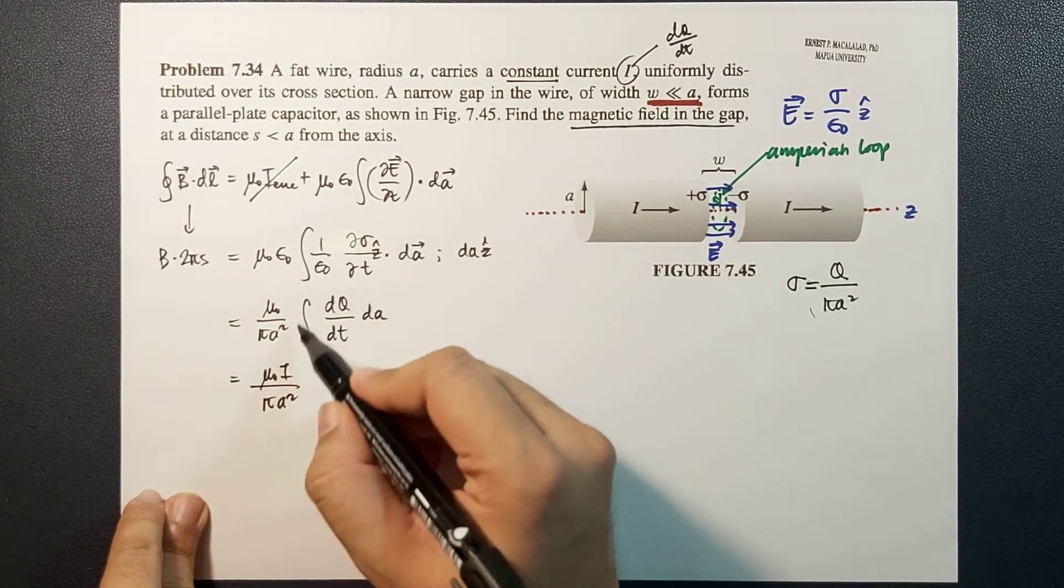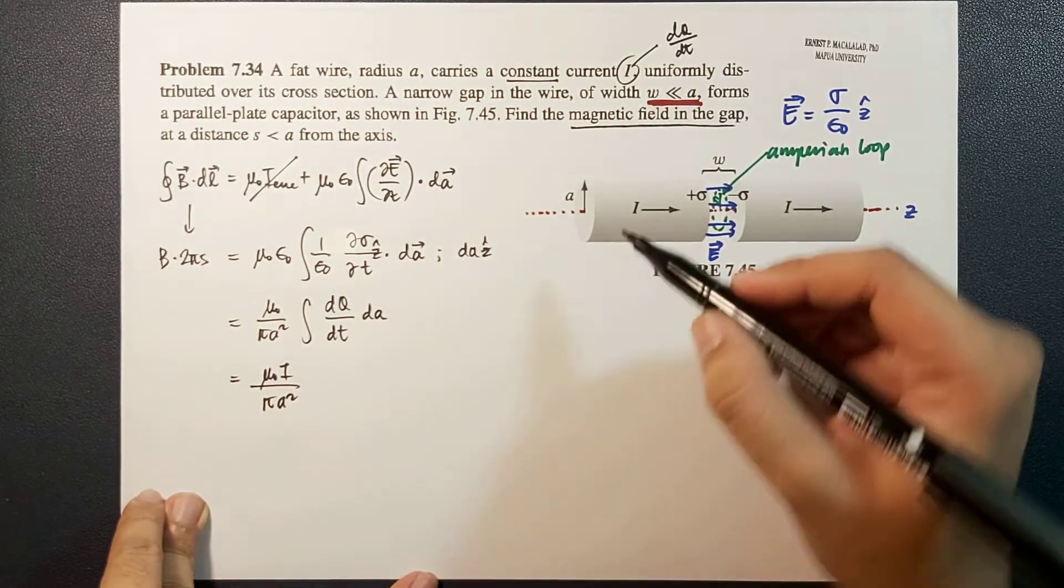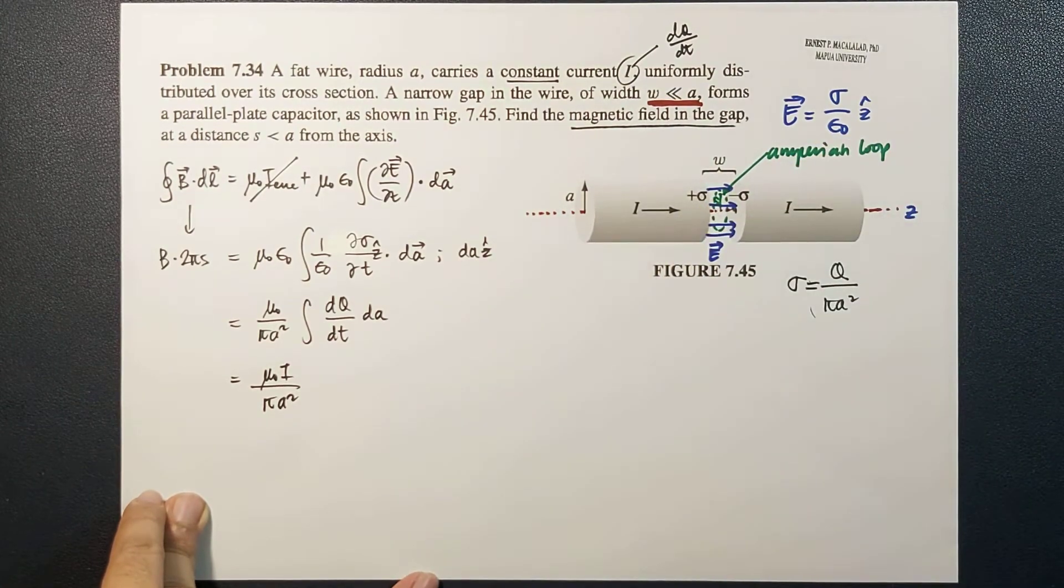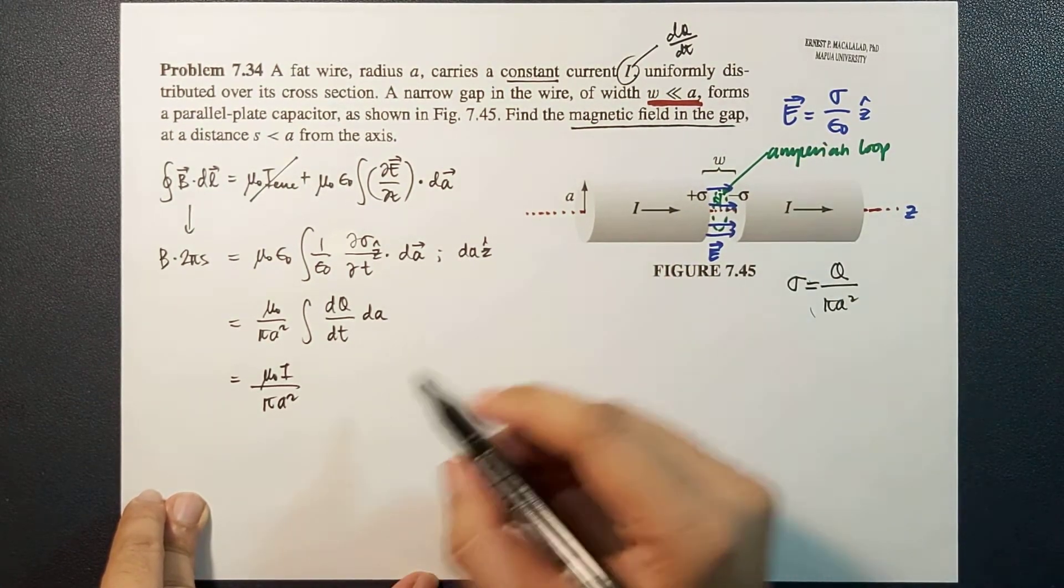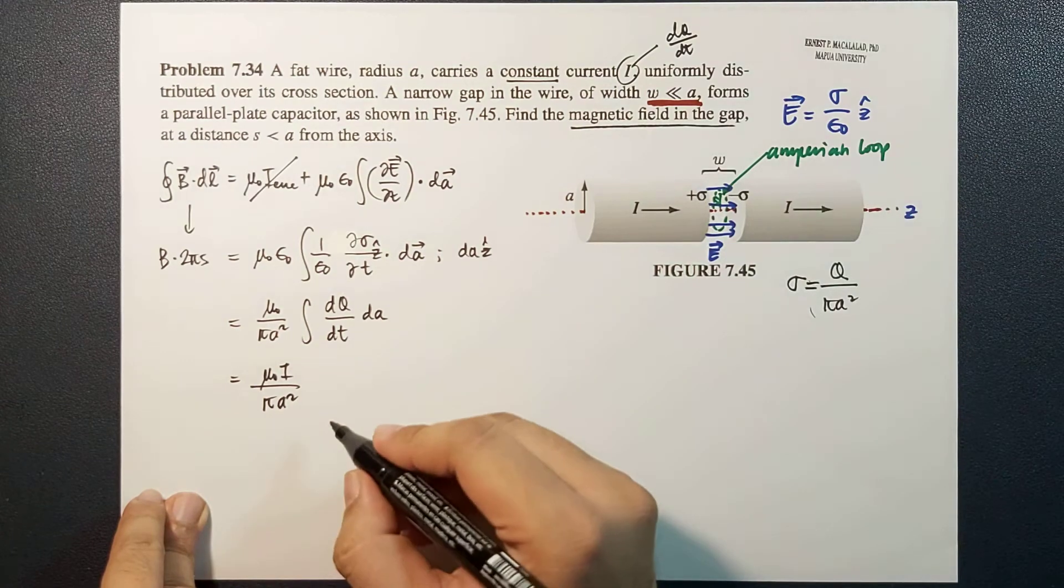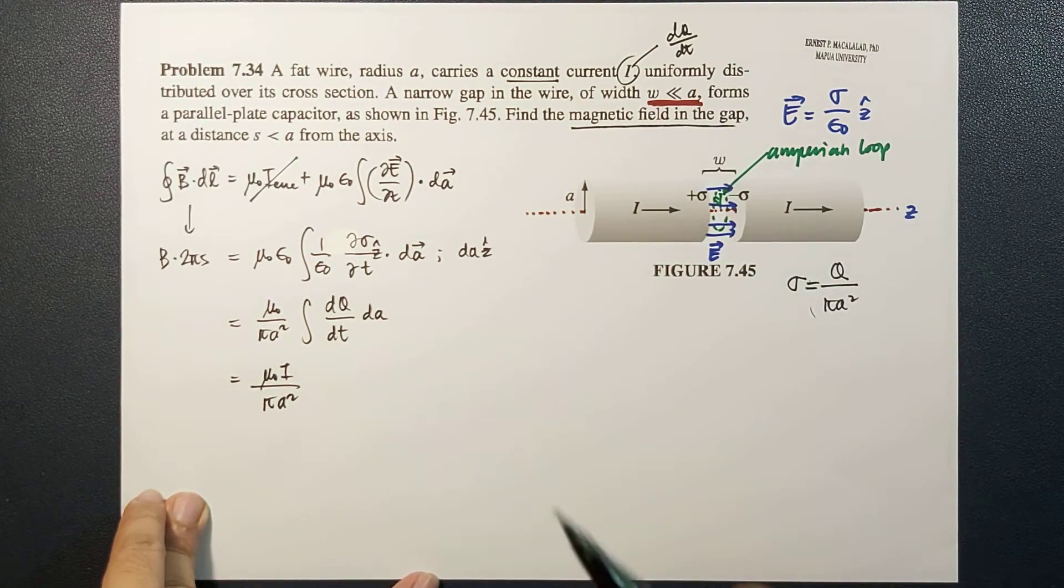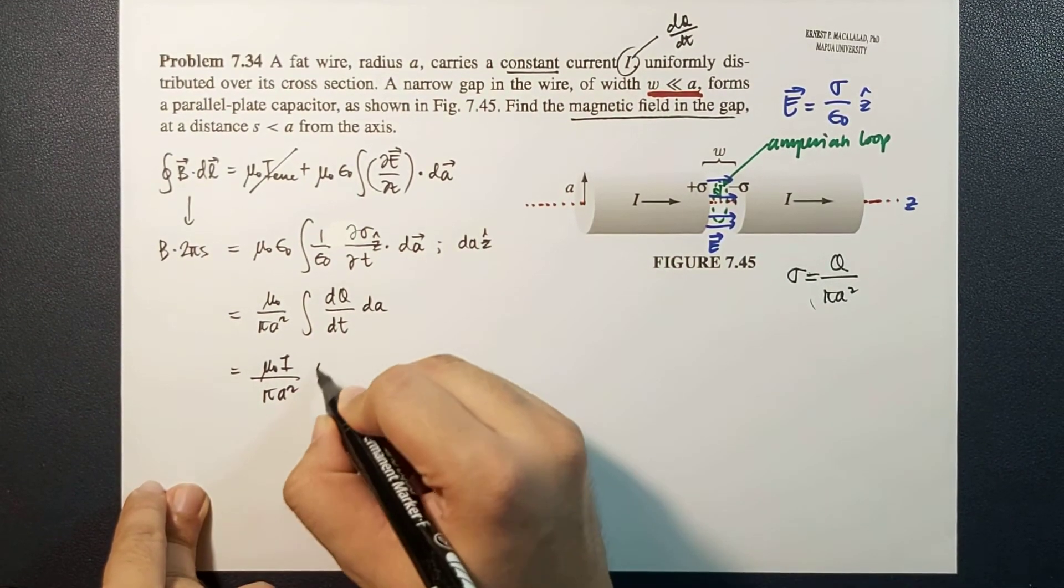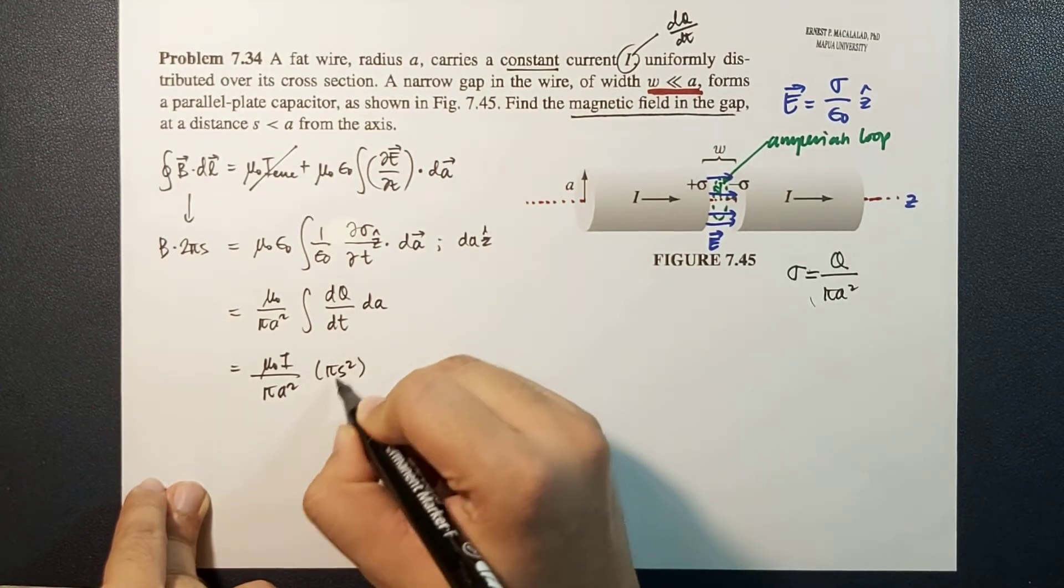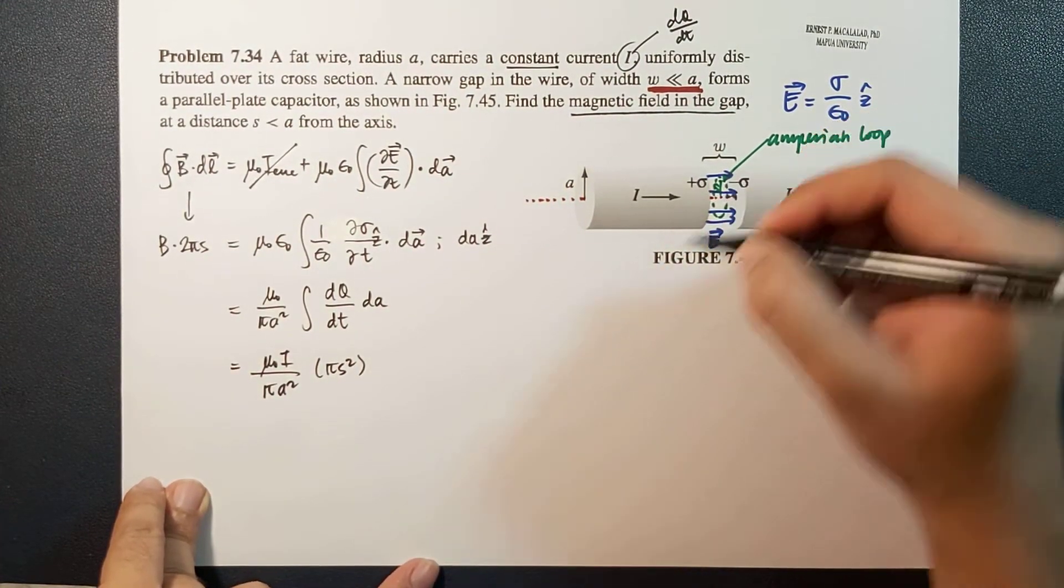And this becomes integral of dA, which is just the area of the Ampere loop, which is pi S squared. So this is the area of the Ampere loop.